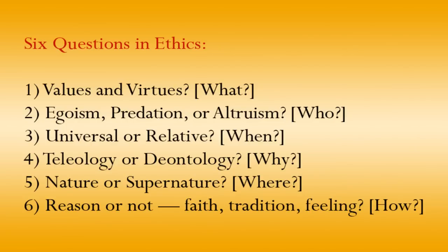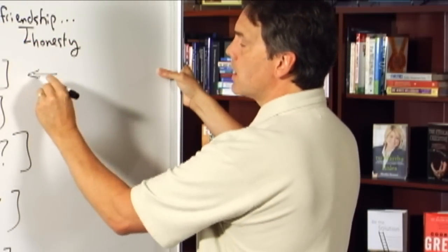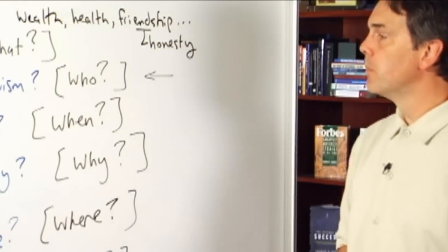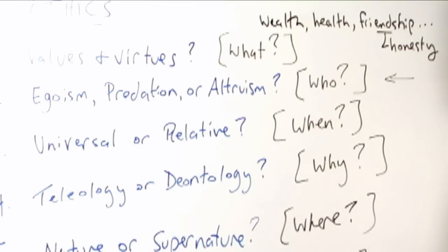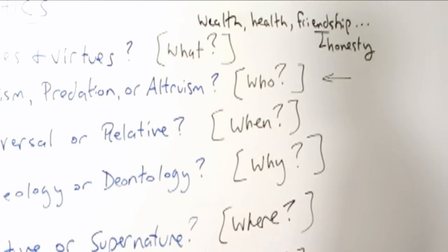All right, six questions for the rest of this unit. Since we can't talk about all of these, this would be a semester's course at least in its own right. I'm going to focus primarily on this question here, the question of egoism, predation, or altruism. We will make glancing reference to some of the other questions in sorting through this set of issues, as everything is interconnected here. But the heart and soul of our discussion henceforth will be on question number two.